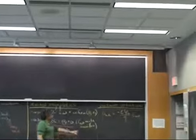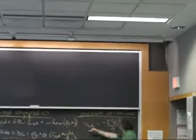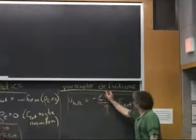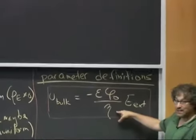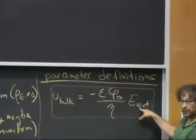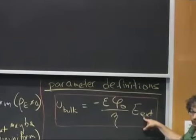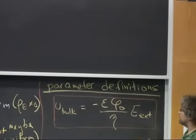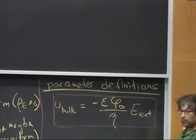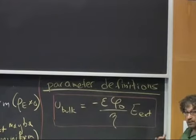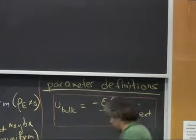Now, because this basically says that our velocity is given by, in many cases, a uniform property multiplied by the extrinsically applied electric field, we find that it's convenient to define the property of a fluid-solid interface called the electroosmotic mobility.